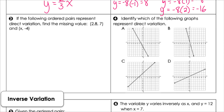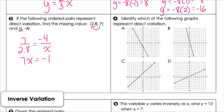Number three tells us that two ordered pairs represent direct variation, and we want to find the missing x value. First, find the constant: 7 divided by 2.8. That same constant must hold for the other ordered pair. Setting them equal and solving, I get 7x equals negative 11.2. Dividing by 7, the x coordinate is negative 1.6.